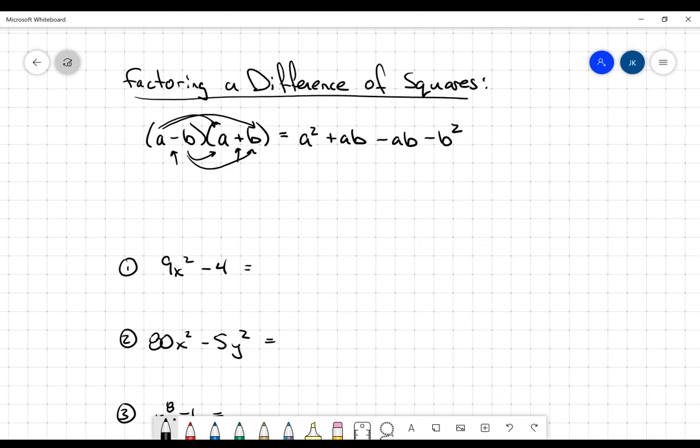Let me multiply those all out, distribute those two terms, and notice that those middle terms, the positive ab and the negative ab, they cancel each other out, and what we're left with is a squared minus b squared. So I know that a minus b times a plus b is equal to a squared minus b squared, the difference between two squares.